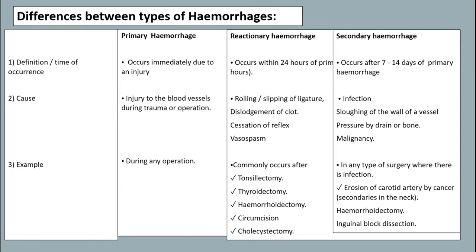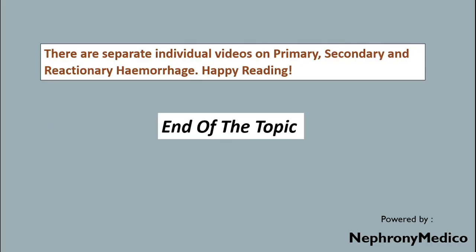Secondary hemorrhage is due to infection, sloughing of the vessel wall, pressure by drain or bone, and malignancy. Examples: primary hemorrhage may occur during any operation; reactionary hemorrhage occurs commonly after tonsillectomy, thyroidectomy, hemorrhoidectomy, circumcision, and cholecystectomy. Secondary hemorrhage occurs in surgeries complicated by infection, such as hemorrhoidectomy, lymph node dissection, and others.